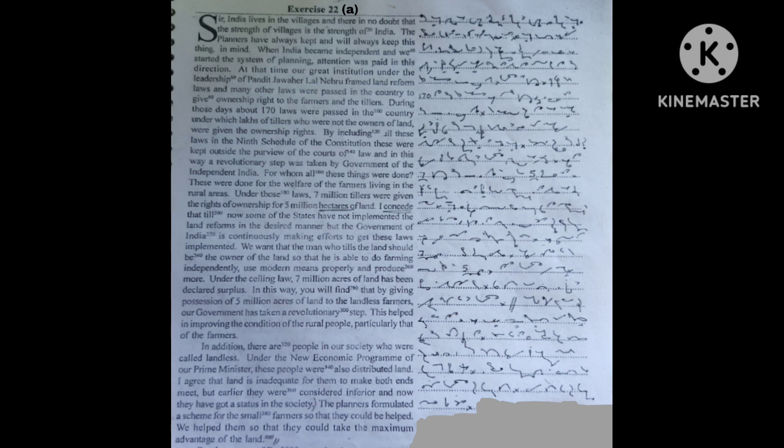During those days, about 170 laws were passed in the country under which lakhs of tillers, who were not the owners of land, were given the ownership rights.